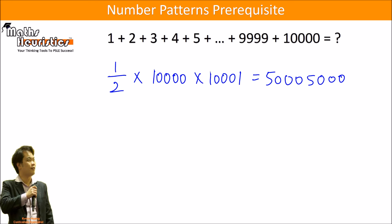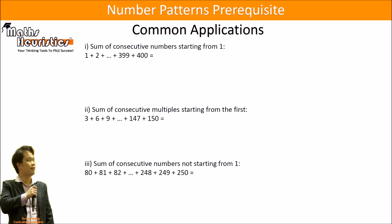So how can we use this formula in some pattern problems? Here are some common applications. As we discussed earlier, when you have the sum of consecutive whole numbers starting from 1, this would just be half times the last number times that last number plus 1. So this would be 80,200.